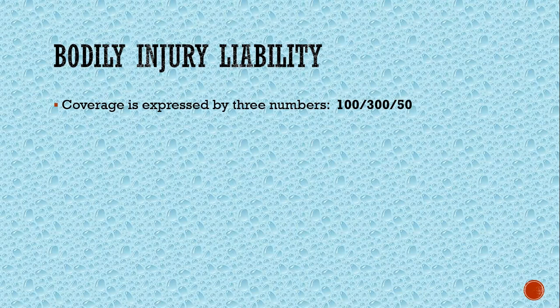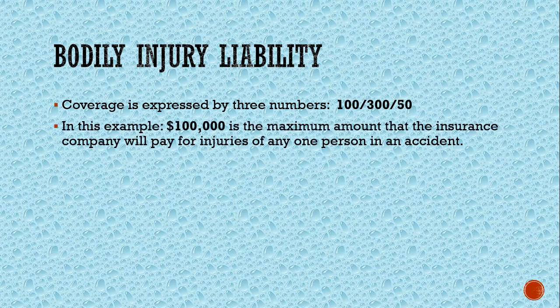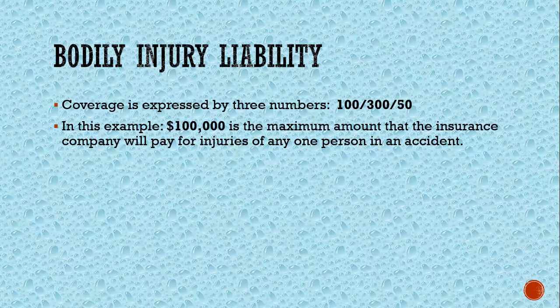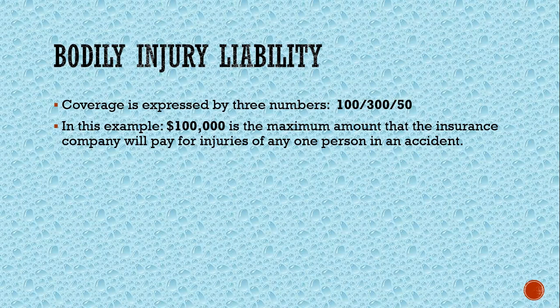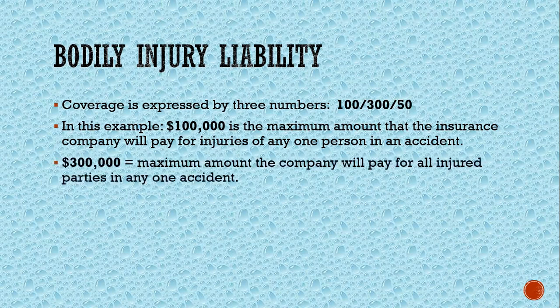When you get auto insurance, you'll see the coverage expressed by three numbers. In this example it's 100/300/50. The first number — 100 — means that $100,000 is the maximum amount the insurance company will pay for injuries of any one person. The second number — 300 — says that $300,000 is the maximum amount the company will pay for all injured parties in one accident. So you're paying up to $100,000 per person, but the max total is $300,000. If you have a really big family and need a 15-passenger van, you probably want that number to be higher because those costs can really add up. The last number is the limit for payment for damage to property of others. I have a relative whose house was hit by a drunk driver — the truck went through his bedroom. That guy's insurance would pay up to $50,000 towards the damage of someone else's property.